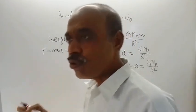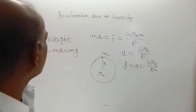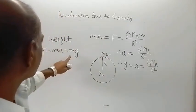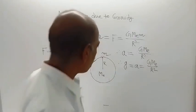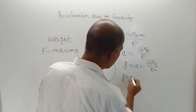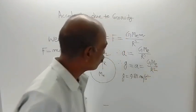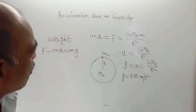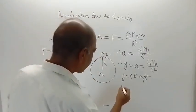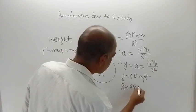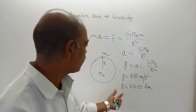So weight of any object equals the force of attraction applied by the Earth on that object — that is the weight of the body, equal to mass into acceleration due to gravity. The average value of g for our planet Earth is 9.81 m/s², and the radius of Earth is equal to 6400 kilometers.